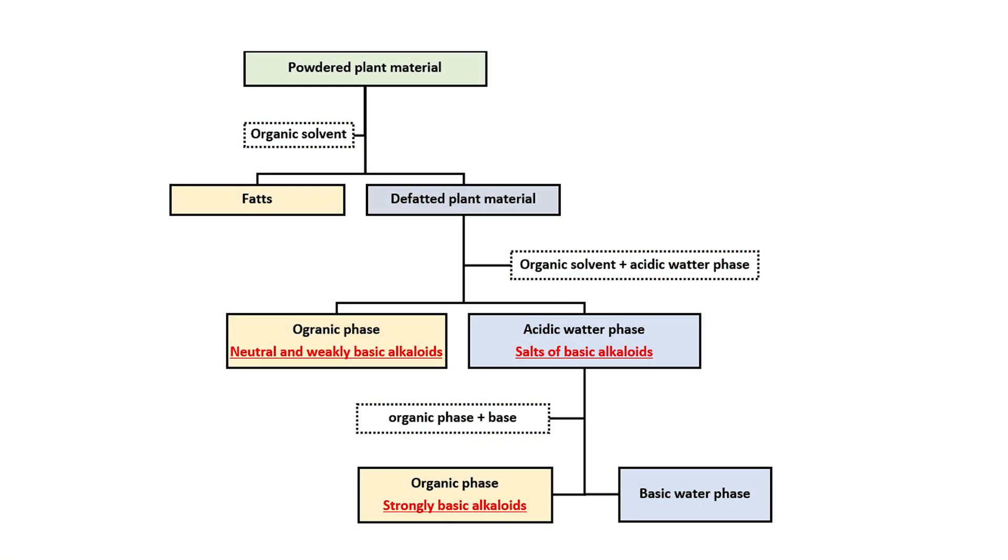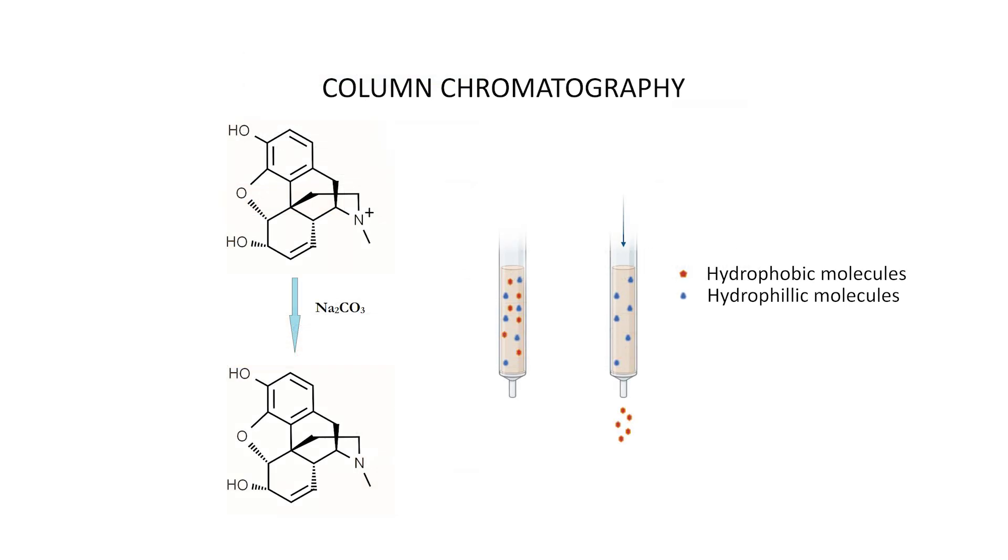This laboratory exercise presents the model isolation and identification of alkaloids from heterogeneous plant material. Pure fractions of alkaloids are obtained by the shown multi-stage extraction. A simplified procedure with one-stage extraction will suffice to perform this exercise.